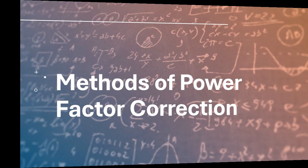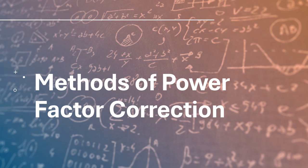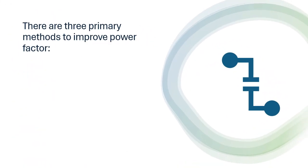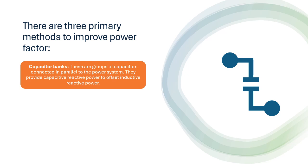Methods of Power Factor Correction: There are three primary methods to improve power factor. Capacitor Banks - These are groups of capacitors connected in parallel to the power system. They provide capacitive reactive power to offset inductive reactive power.